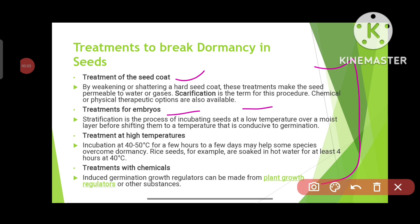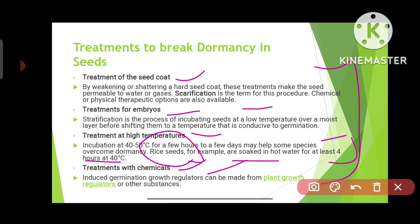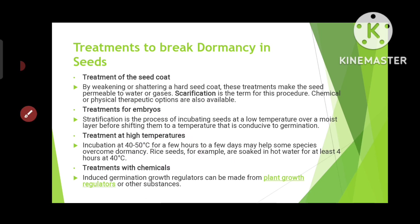The next method is treatment of embryos. Stratification is the process of incubating seeds at a low temperature over a moist layer before shifting them to a temperature conducive to germination. For high-temperature treatment, incubation is done at 40 to 50 degrees Celsius for a few hours to a few days, depending on the species — for example, rice seeds are soaked in hot water for at least four hours at 40 degrees Celsius. Chemical treatment using plant growth regulators can also induce germination.